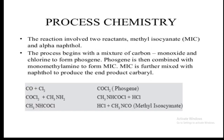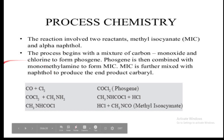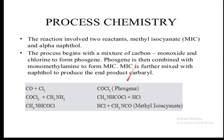At the plant, the insecticide carbaryl was manufactured by the reaction between methyl isocyanate (MIC) and alpha-naphthol. The MIC for the process was prepared from methyl amine and phosgene, and it was stored in a large storage tank at the plant. When methyl isocyanate reacts with alpha-naphthol, the product is carbaryl, the insecticide.